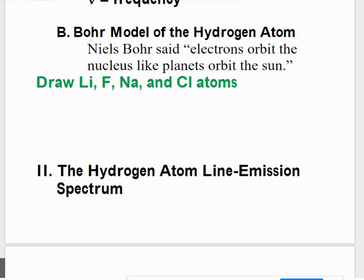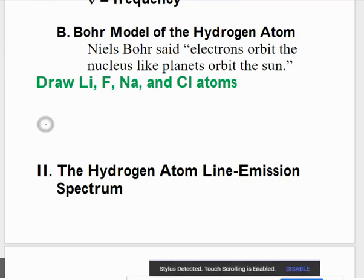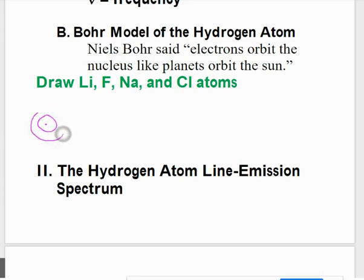For the Bohr model, I'm going to draw the nucleus as a dot and then the energy levels around it. This first energy level holds two electrons. So I can add my two electrons there, and then it's filled, and we have one more electron to add, so it needs to go to the second energy level. That's the Bohr model for lithium.